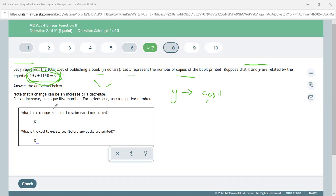What is the change in the total cost for each book printed? Whenever I talk about change for each book, it's the concept of slope. The slope, if you remember, is the coefficient of x. So the slope here is 15, and the answer is 15 here. I'm going to write the number 15.